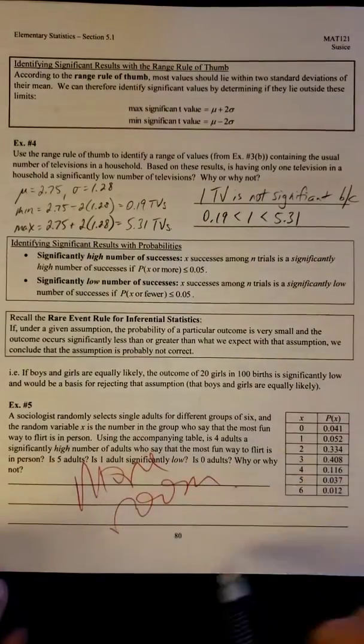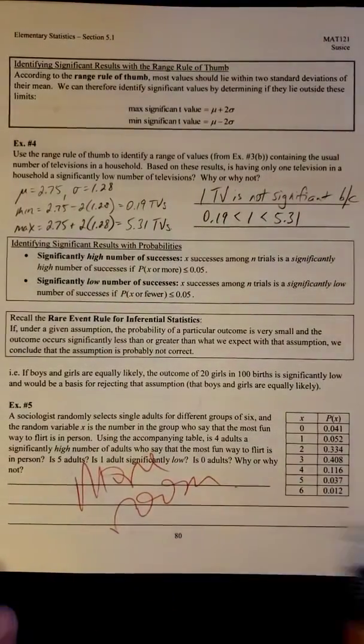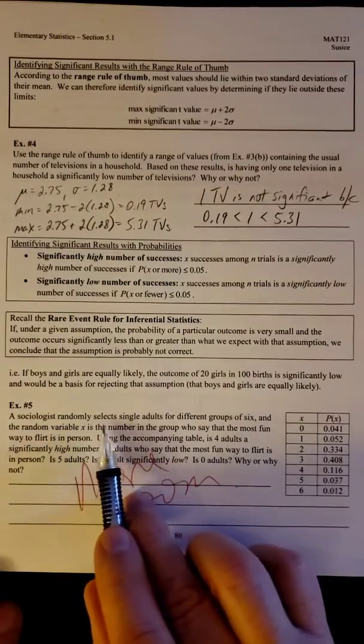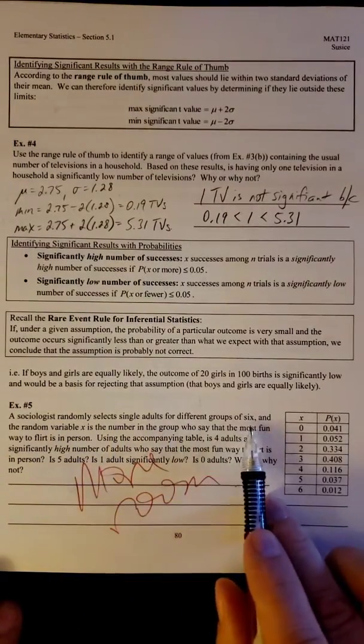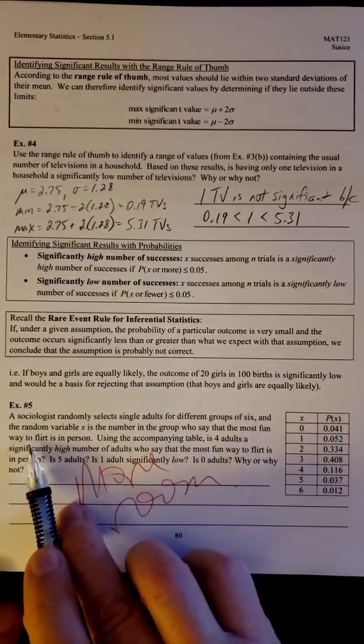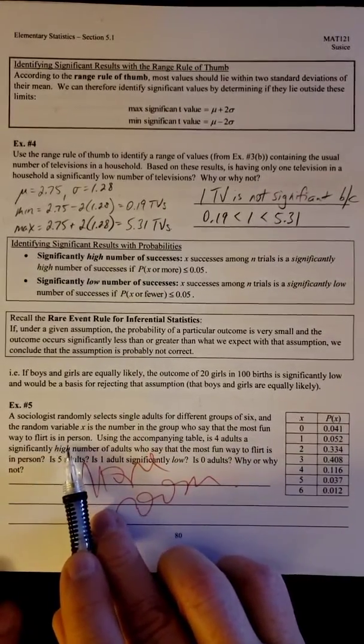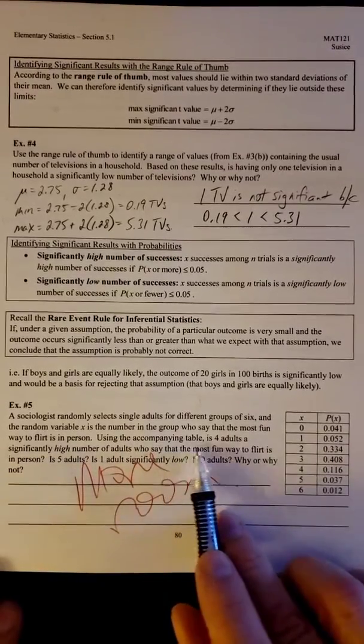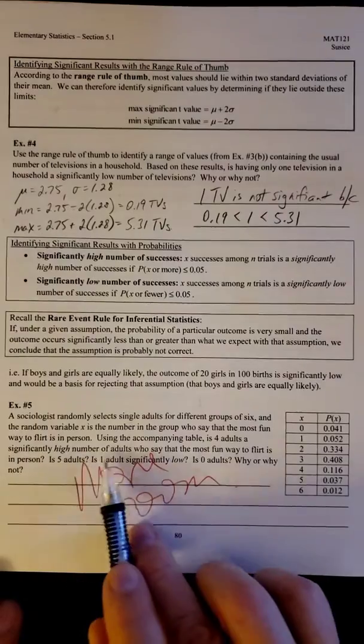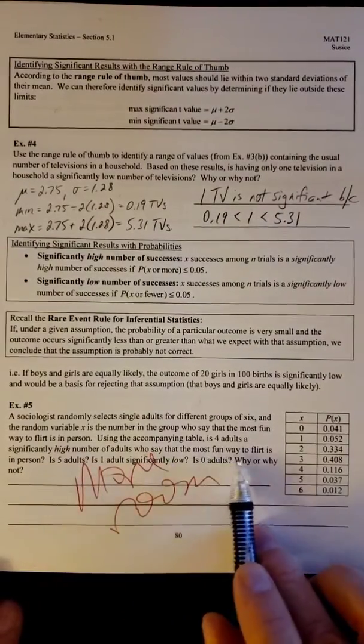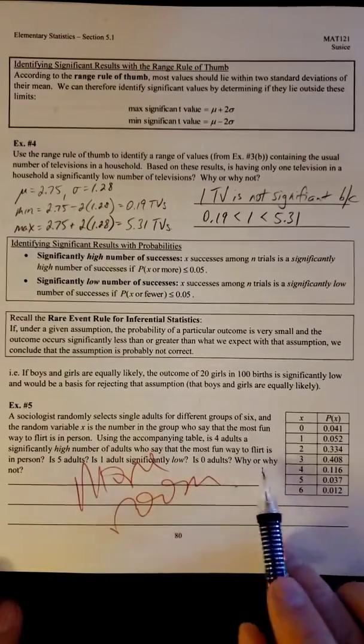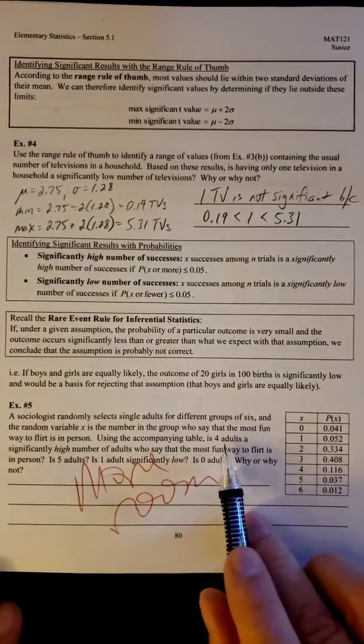So I kind of butchered this problem a little bit, so I wrote it on the other page, but let's just read through it real quick. A sociologist randomly selects single adults for different groups of 6, and the random variable x is the number of the group who say that the most fun way to flirt is in person. Using the accompanying table, is 4 a significantly high number of adults who say that the most fun way to flirt is in person? Is 5 adults? Is 1 significantly low? Is 0 adults? Okay, so let's start with 4.